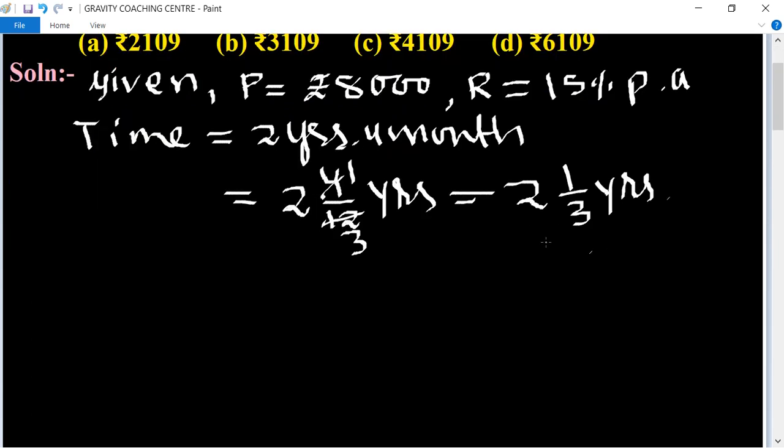Here time is in mixed fraction, so in this case we will use the formula: Amount = P(1 + R/100)^(integer parts)